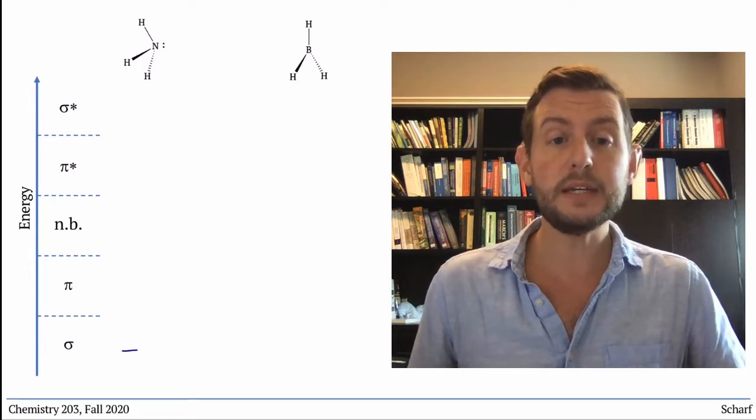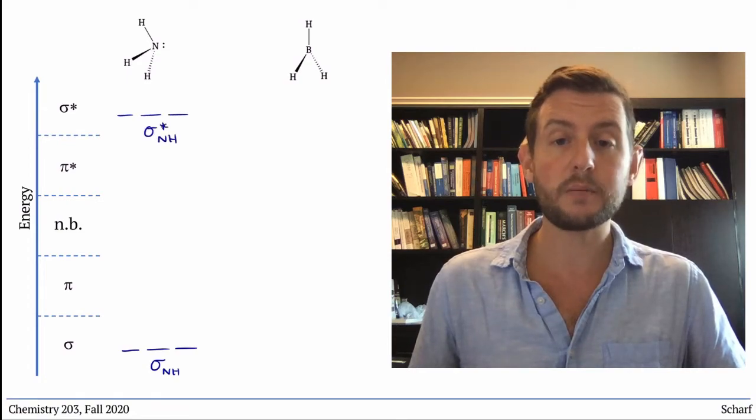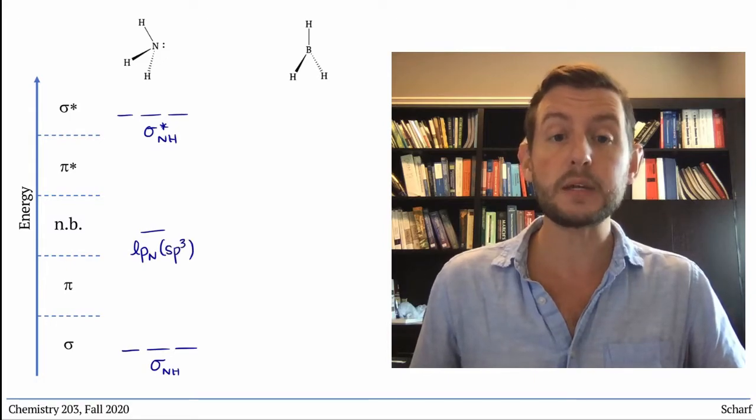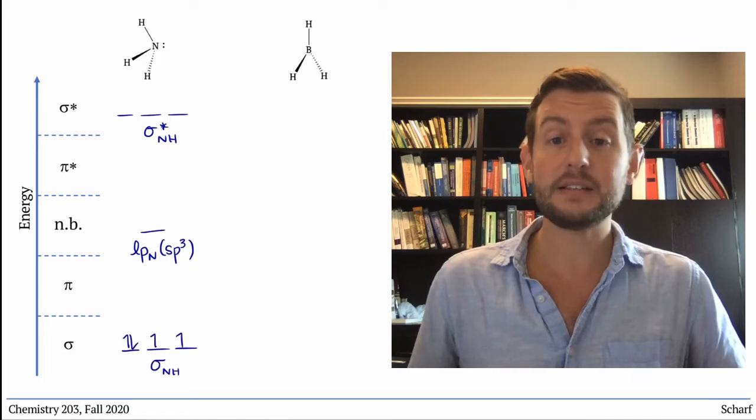Ammonia has three NH sigma bonds, three corresponding sigma star orbitals, and one lone pair on nitrogen, which happens to be in an SP3 hybrid orbital. Ammonia has eight valence electrons.